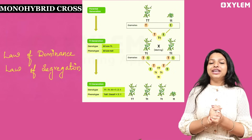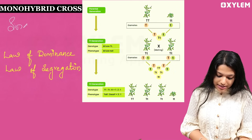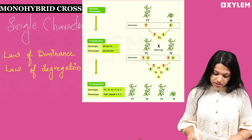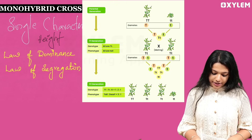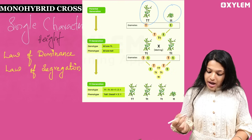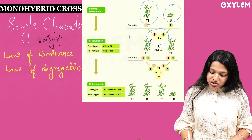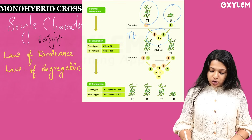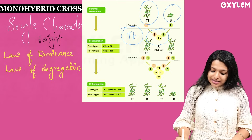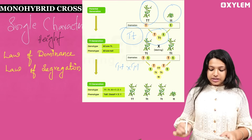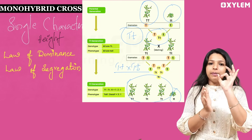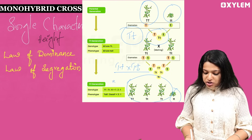This is a monohybrid cross — a cross using a single character. For example, we use height. Capital T represents tall, small t represents dwarf. In the monohybrid cross, you get 3 tall plants and 1 dwarf plant, so the phenotypic ratio is 3:1.